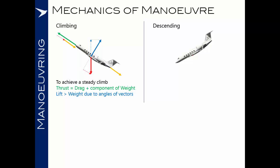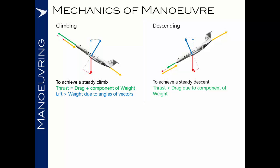In a descending scenario, weight still acts towards the centre of the earth, and lift counters it. Drag acts to slow the aircraft down, but this time a component of the weight vector acts to counter the drag. Therefore, the thrust required is the drag minus the thrust component of the weight. To achieve a steady descent, thrust must be less than drag, due to the component of weight which acts to assist the thrust.